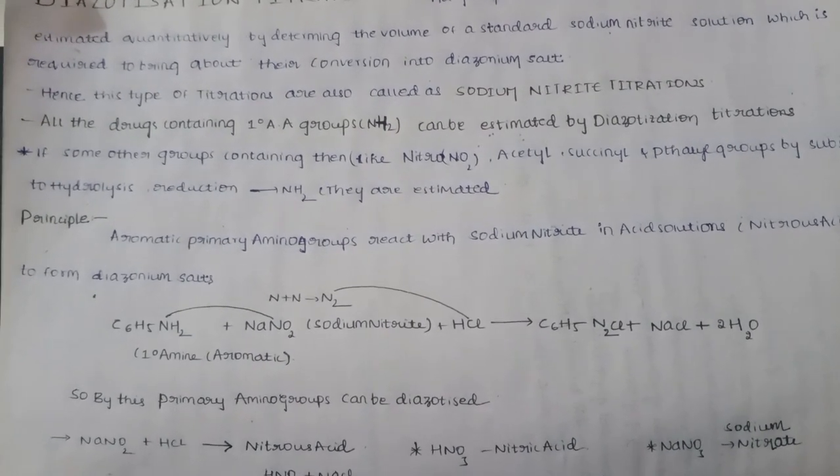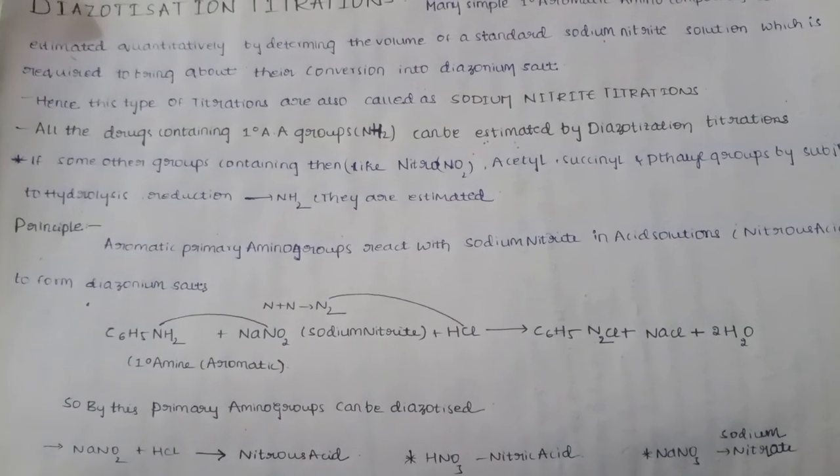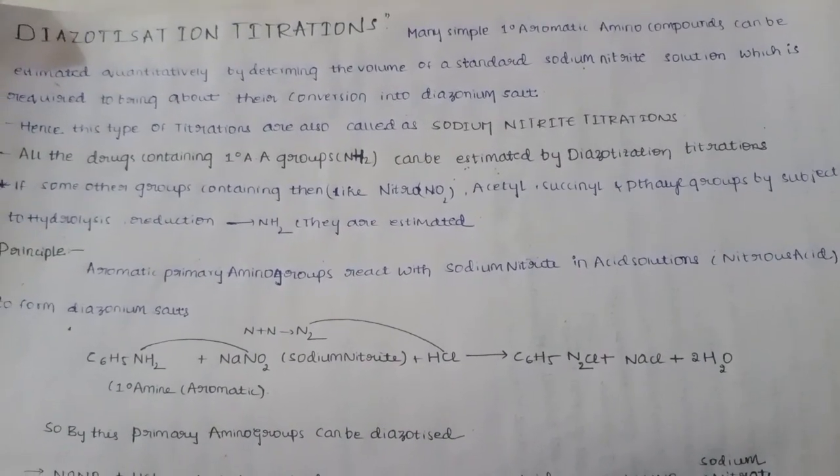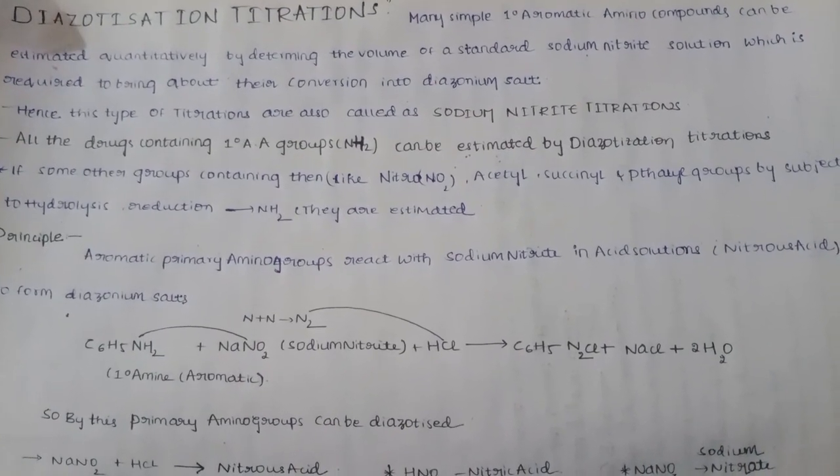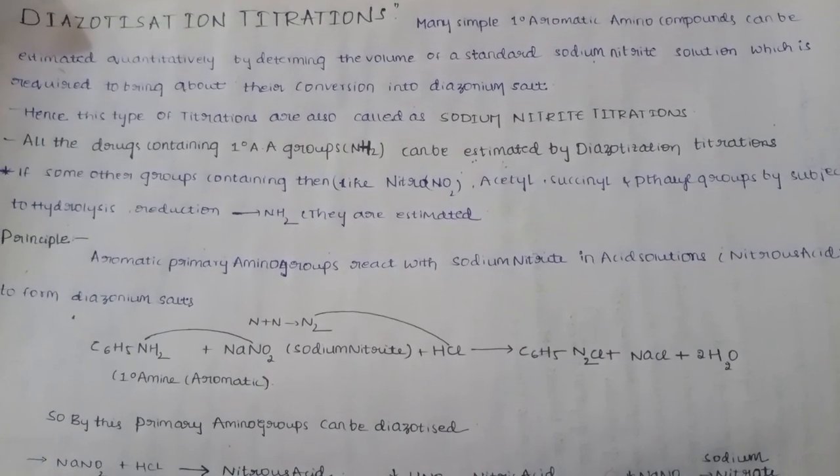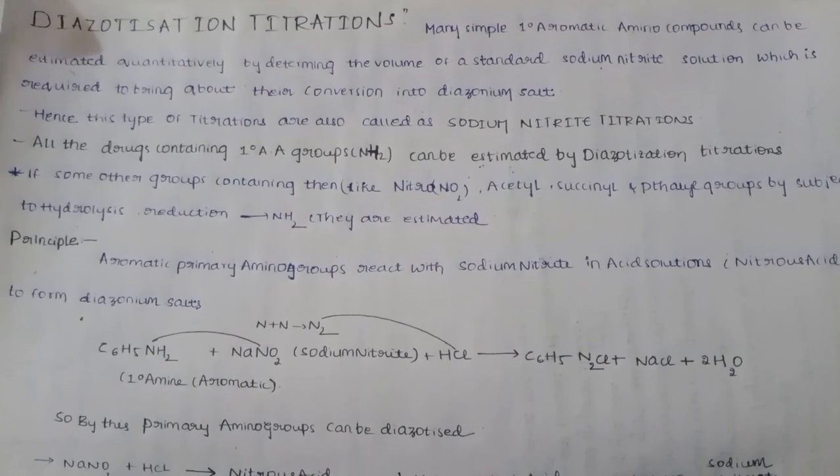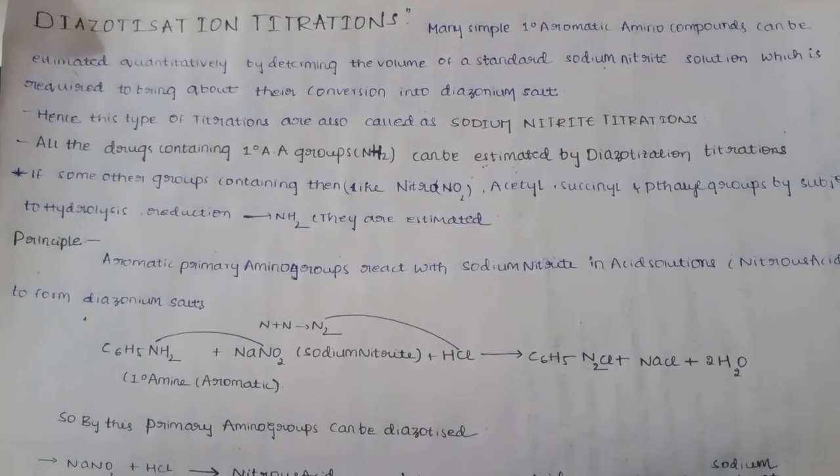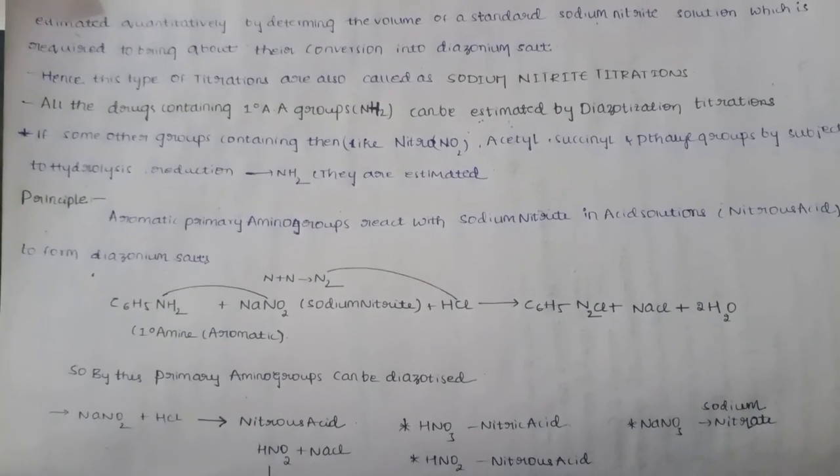We can identify the aromatic amino compound and sodium nitrite react to form diazonium salt. Hence this type of titrations are also called as sodium nitrite titrations.